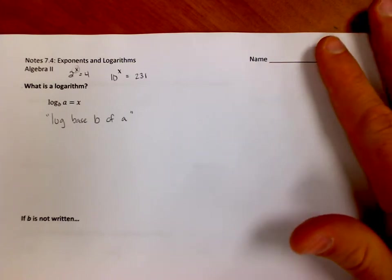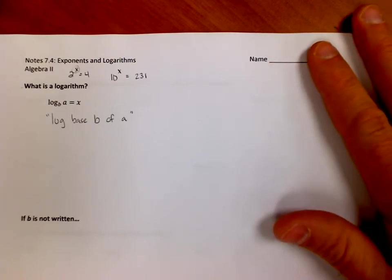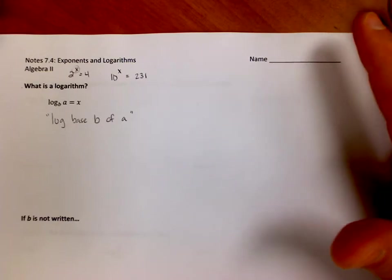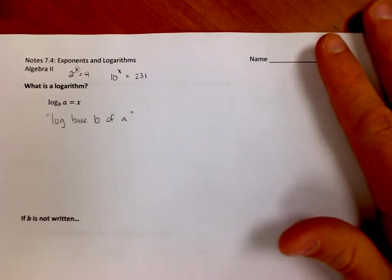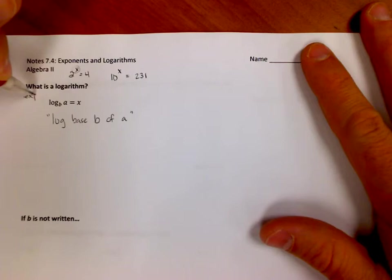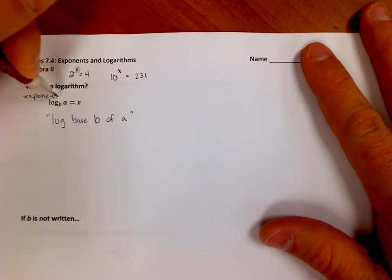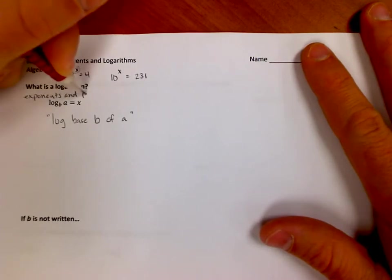Really what this is, what you need to understand is just like adding and subtracting are opposites of each other, multiplying and dividing are opposites, squares and square roots are opposites, cubes and cube roots are opposites, exponents and logs are opposites, logarithms.